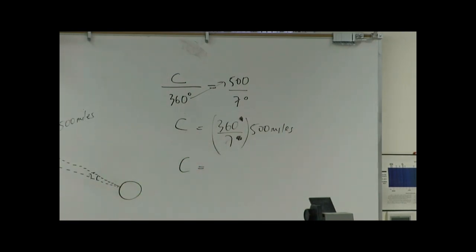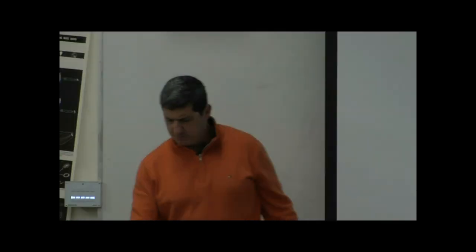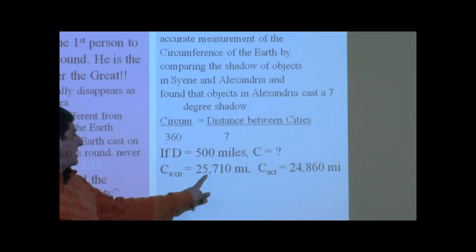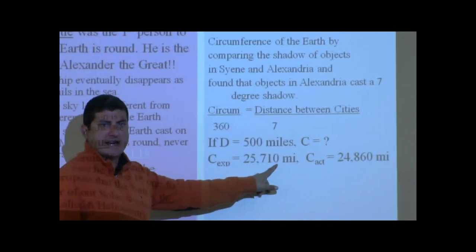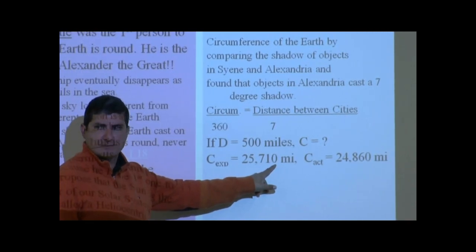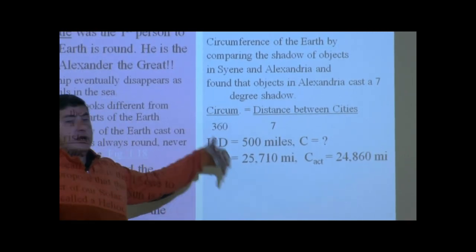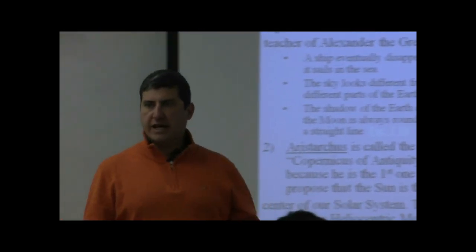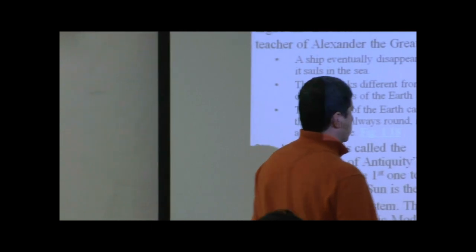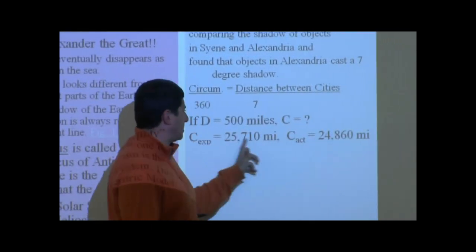So if you perform this calculation, which I have done, I got an answer. When you do this calculation on the calculator, you get 25,710 miles, circumference of the Earth. And then I looked up the data tables to see what the actual circumference of the Earth is. And then you get 24,860. Very close.